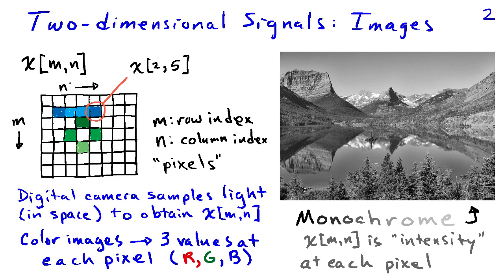A color image requires three values at each pixel because you have to specify the red, the green, and the blue, and by putting those together you obtain the precise color associated with that pixel. In contrast, a monochrome or black-and-white image has a single intensity value at each pixel. This particular image, generated as a JPEG file, has intensity values between 0 and 255 because there are eight bits allowed to describe the intensities.